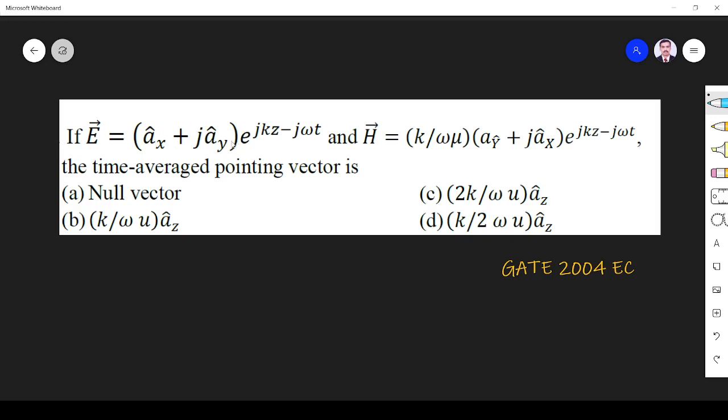The question is, if E is equal to ax plus jay ay e power jkz minus j omega t and H is k by omega mu ay plus jax e power jkz minus j omega t, the time averaged Poynting vector.